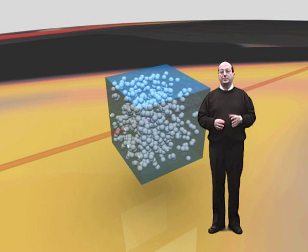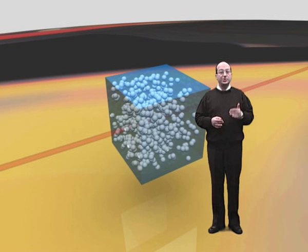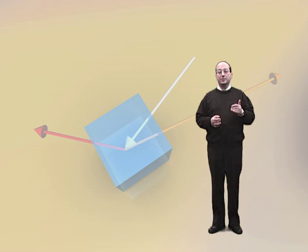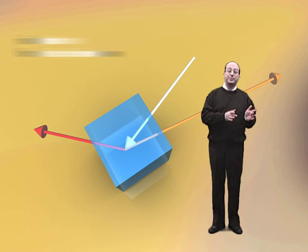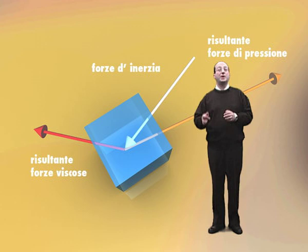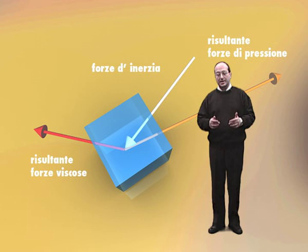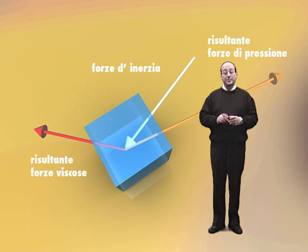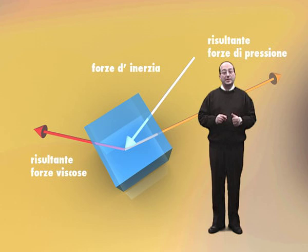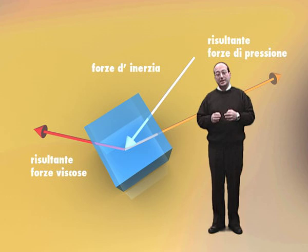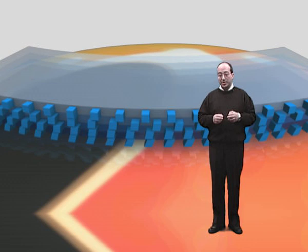Being known the forces acting on the elementary volume of fluid, they can be introduced into Newton's law to be related with the acceleration of the mass of the fluid. In this way, we obtain an equilibrium equation. The vectorial sum of pressure forces, viscous forces and inertia force — that is, the mass of the fluid particles multiplied by acceleration — must be zero. This acceleration determines, instant by instant, the motion and the trajectory of the particle. Weight is not accounted for in the forces because it is balanced by Archimedes' thrust. Viscous friction converts part of the fluid kinetic energy into heat — this phenomenon is accounted for in the energy conservation equation.